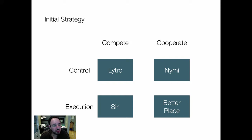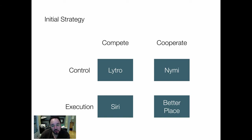Lytro chose to compete with the camera makers, but they've gone fairly slowly, seeking patents and other things to control what they've got. NIMI, on the other hand, also sought to control — to have a technology that's their asset to own — but initially looked to cooperate with established firms for a licensing strategy. Siri's initial strategy was to compete with other app makers and focus on having a very good app, focusing on execution. Finally, Better Place was trying to have a superior means of energy-efficient cars but was not trying to compete with existing car makers.